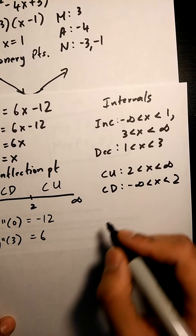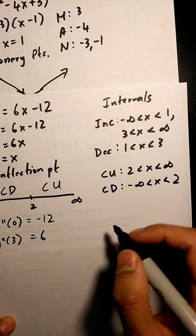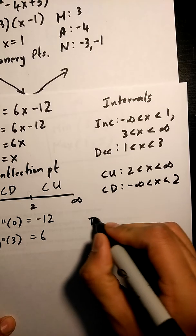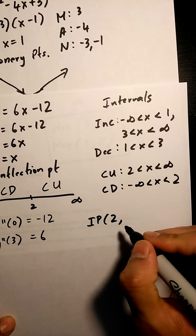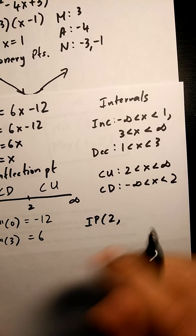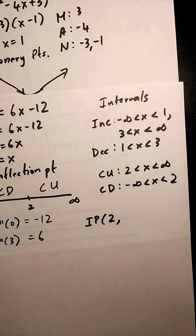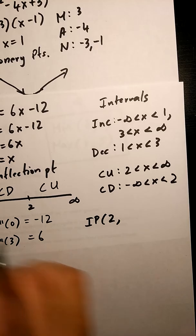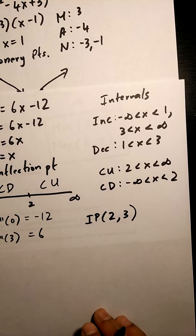Finally, we can do our inflection point. So, inflection point is two comma three.